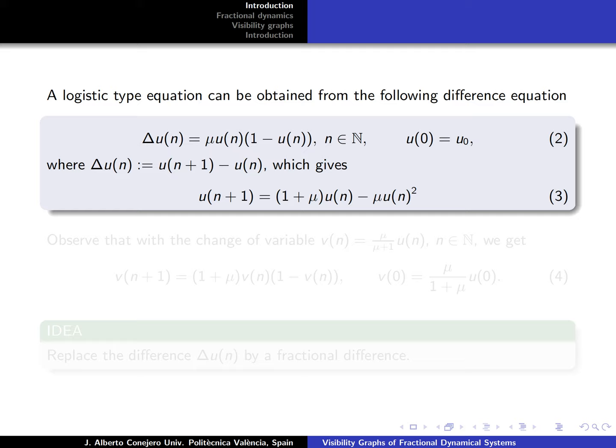If we start with the difference operator Δ, the forward difference operator, which is u_{n+1} minus u_n, from equation 2, making this substitution, we can arrive to equation 3. If we take in equation 3 the change of variable v_n equal to μ divided by μ plus 1 times u, we get the logistic equation in terms of v with initial condition v_0.